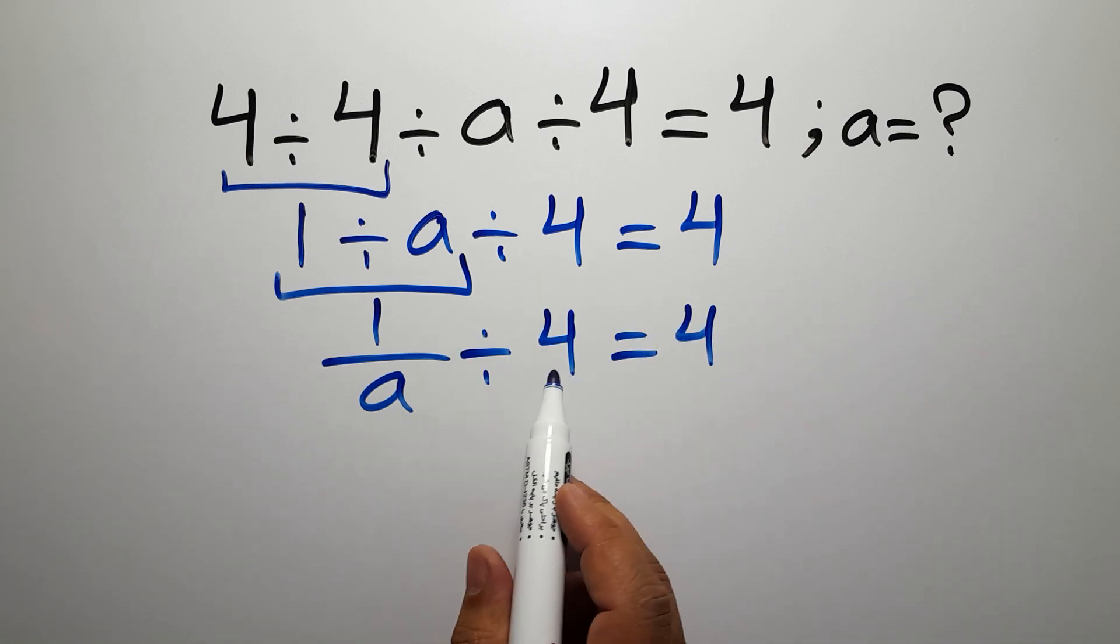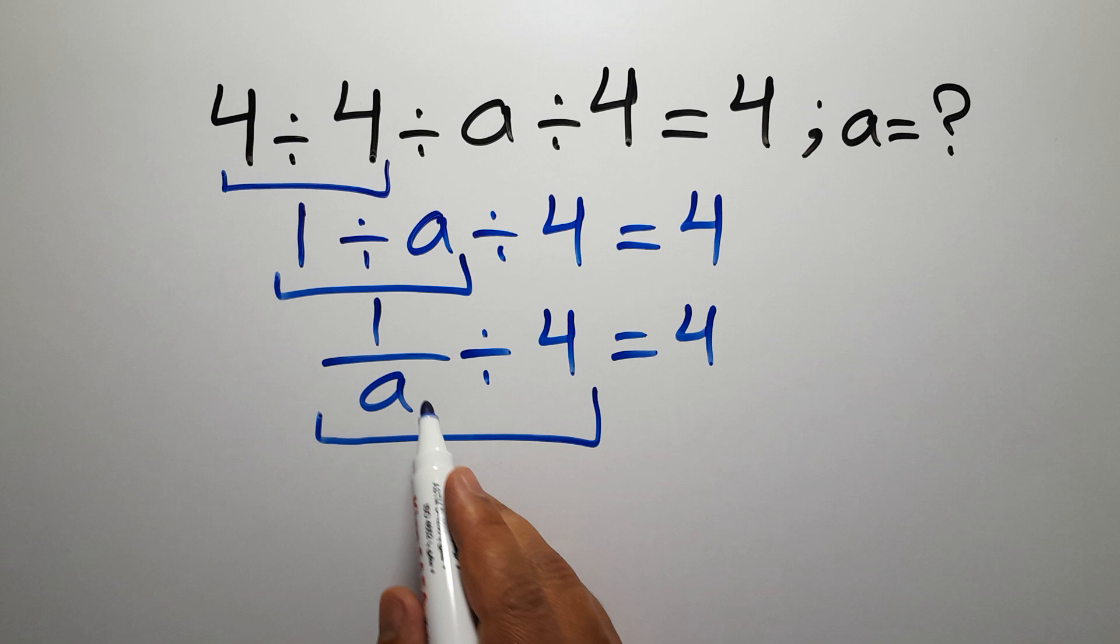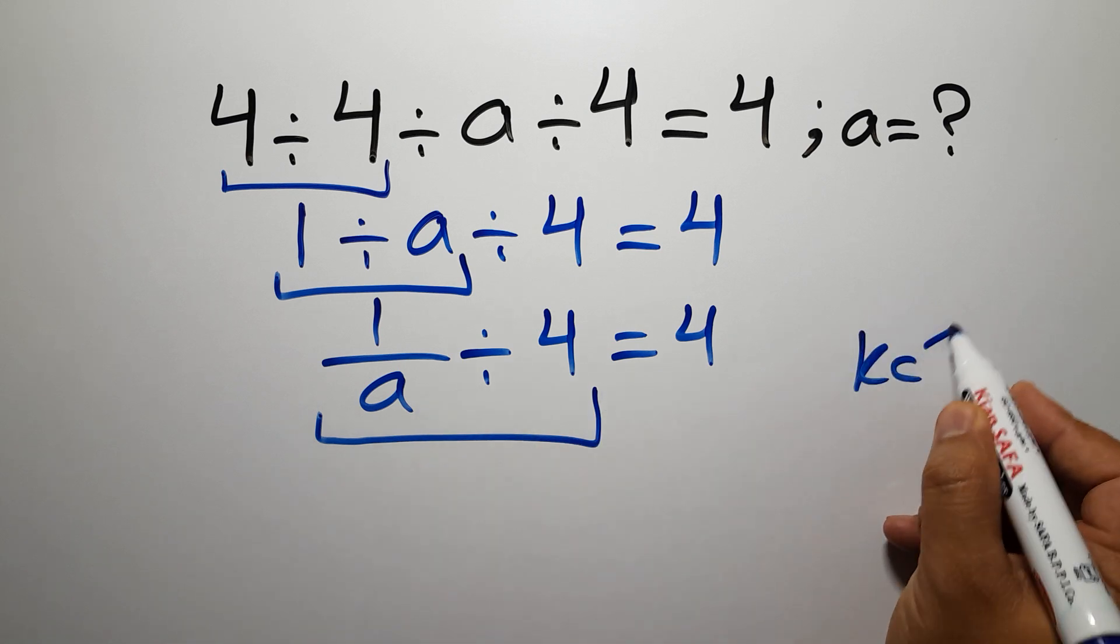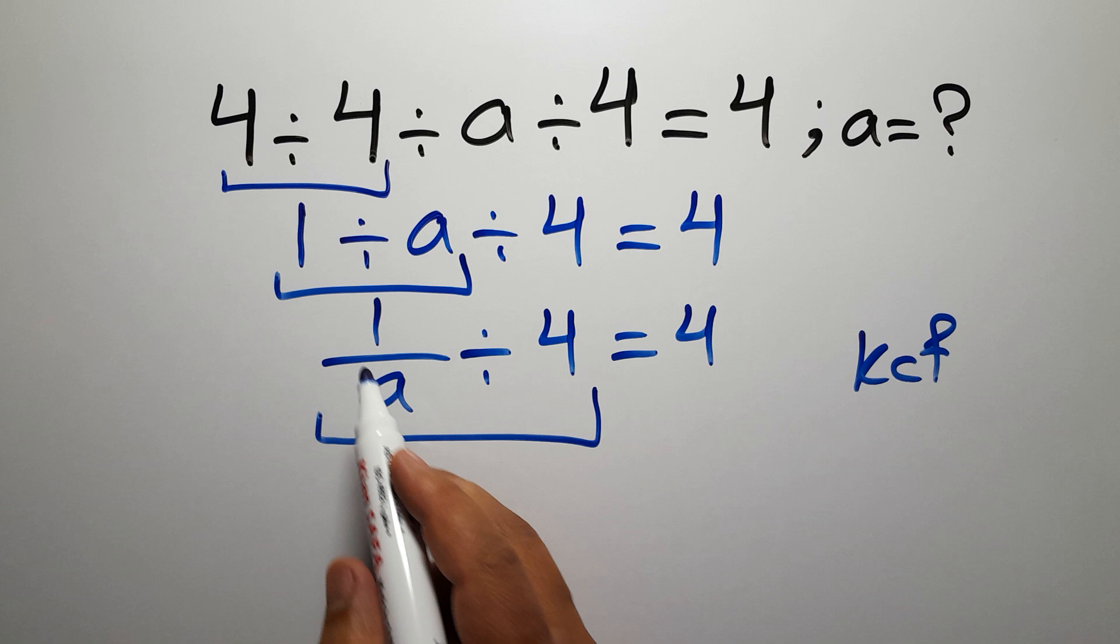On the left hand side we have this fraction divided by 4. According to the KCF rule, K stands for keep, C stands for change, and F stands for flip.